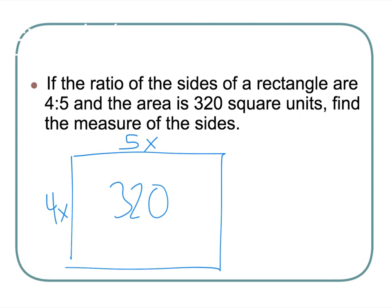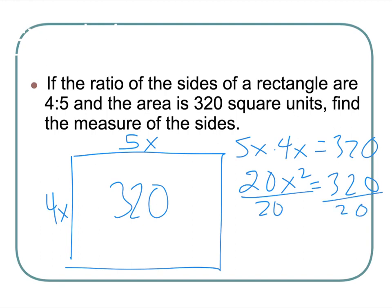Well, I know my length times my width gives me my area. So 5x times 4x is equal to 320. So 5 times 4 is 20. x squared is equal to 320. If I divide by 20, I'm just solving for x now. Algebraing it out.